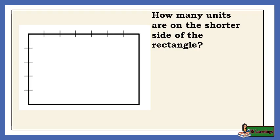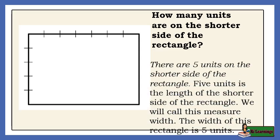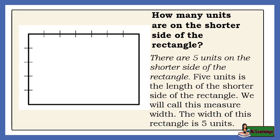How many units are on the shorter side of the rectangle? There are 5 units on the shorter side of the rectangle. 5 units is the length of the shorter side of the rectangle. We will call this measure width. The width of this rectangle is 5 units.